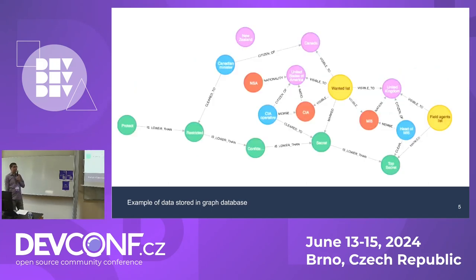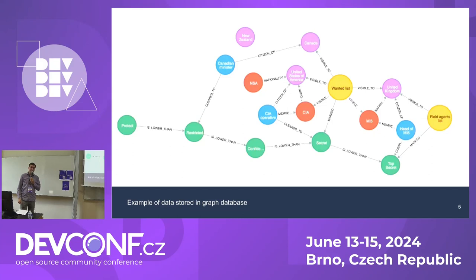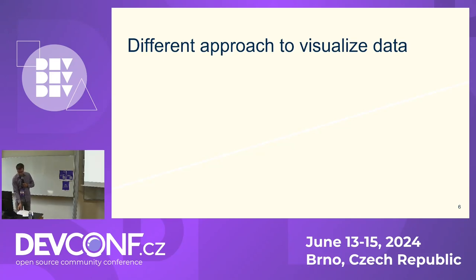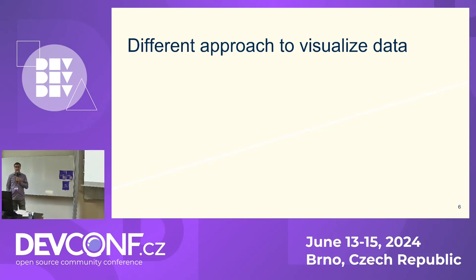Here is an example of how data stored in a graph database looks when we visualize it. It's nice for presentations but not very practical if you are an administrator or software developer who wants to change something, because you don't see much information. Also, many people associate graph databases with data science, but that doesn't have to be true — it's still a database. You can store data in it without using any data science or analytics.